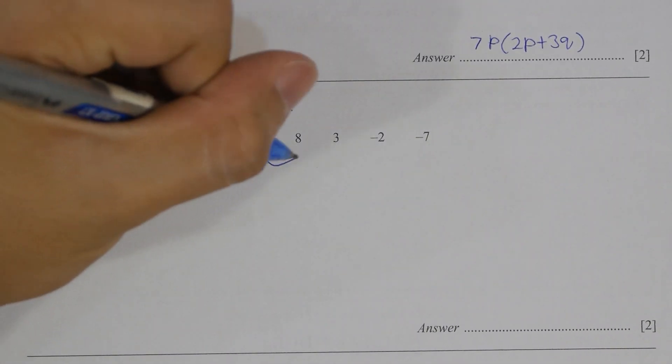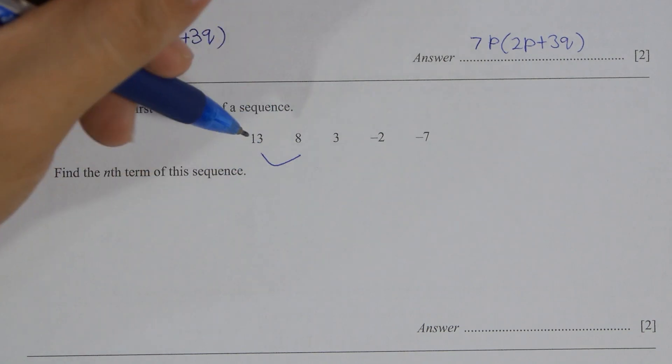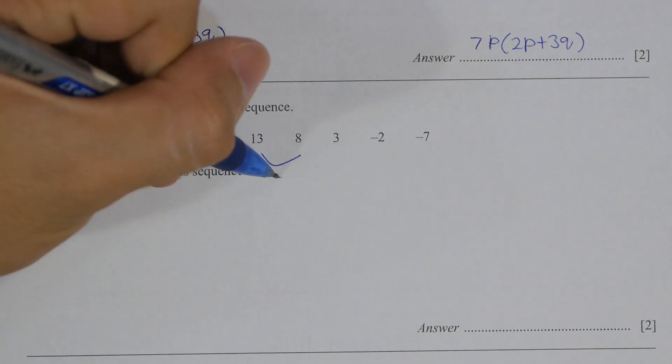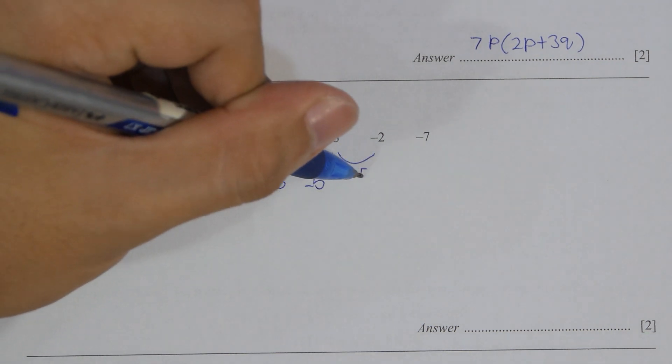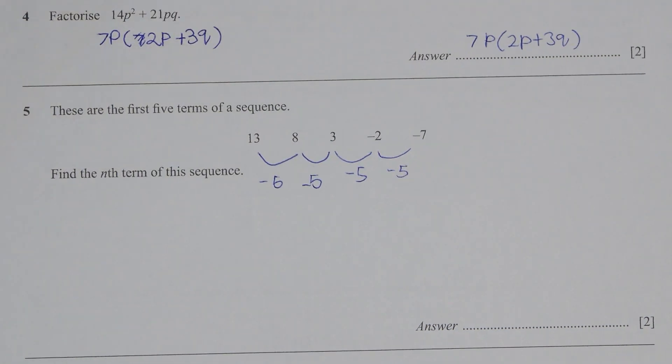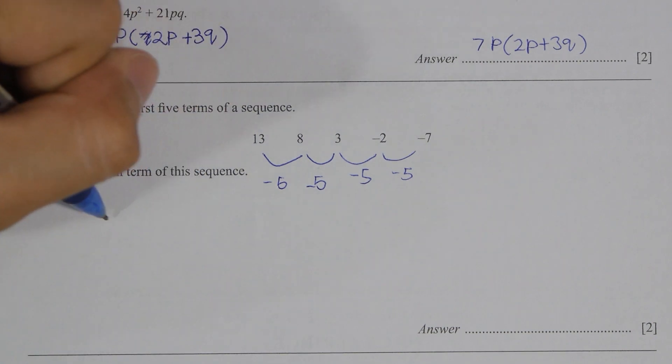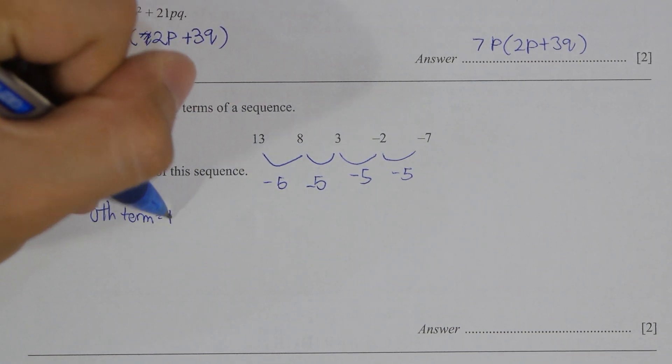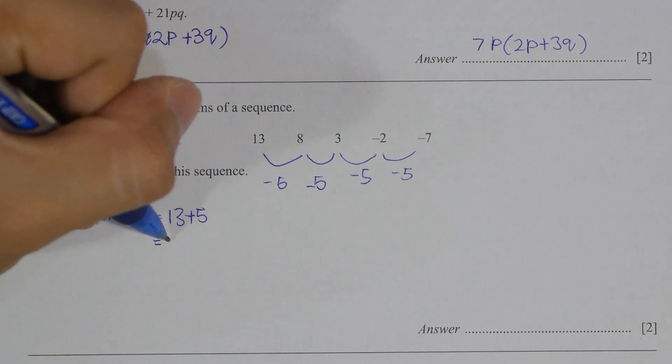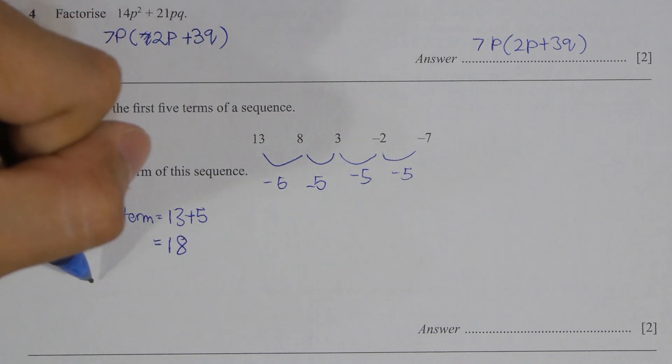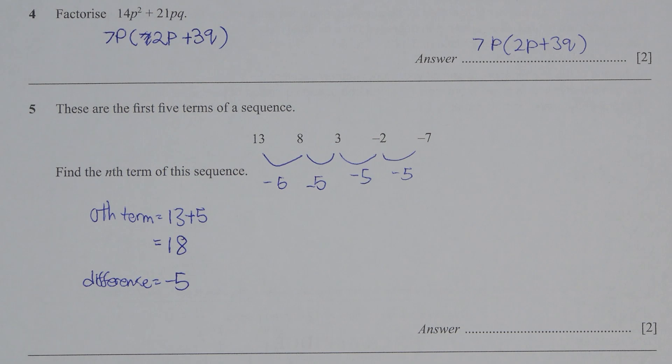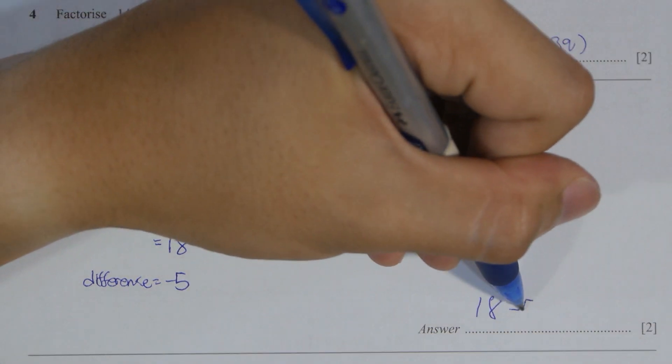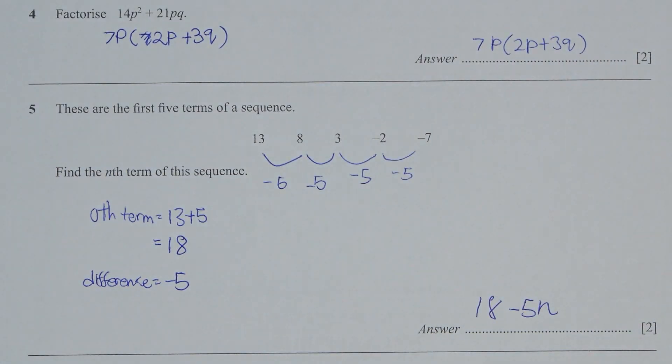Question five, this one is a basic sequences. Their term by term difference is actually negative 5. In order to get the zero term, simply add 5 into 13. So your n term sequence for this one is actually 18 minus 5n. If you happen to be weak at this topic, I will include a link up here which you can click and it will bring you to the explanation video.